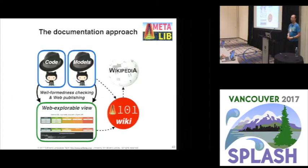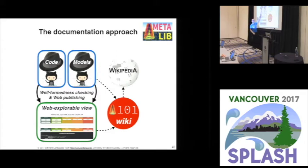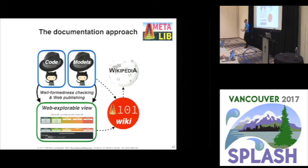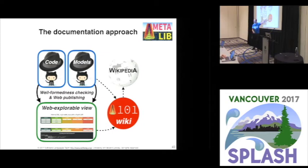The documentation approach at a high level: the code for all contributions lives on GitHub. The models too — they are just files that also live on GitHub. There's well-formedness checking to ensure the documentation models appropriately apply to the code. If the models also conform to the meta model for documentation, then there's automated web publishing. From there, you might come to 101Wiki or the semantic wiki, and from there go to other knowledge resources like Wikipedia.